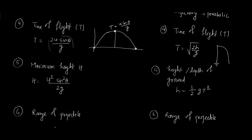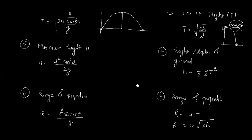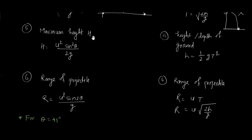For the horizontal projection case, time of flight is the total time during which the projectile strikes the ground, and it is given by T = √(2h/g), where h is the height. An important point: time of flight is independent of the mass of the object.